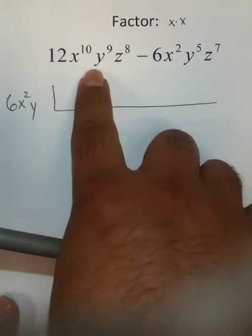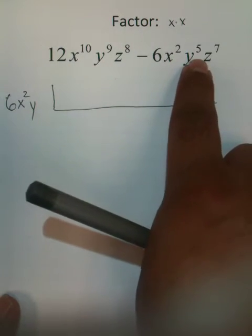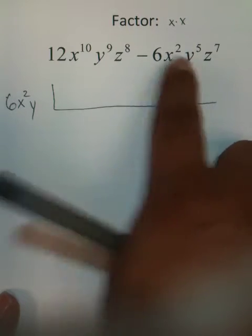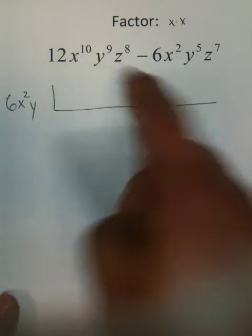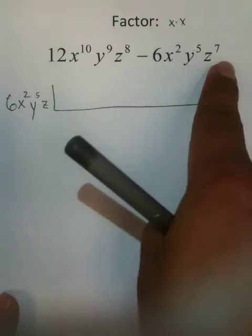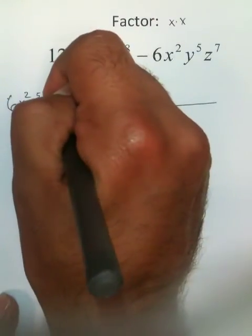The y term, again, you see 9 here and 5 here. Since they're being raised to a power, I'm going to pull all 5 of these because I can pull 5 from here with some leftovers. And then the z, 8 here, 7 here, pull out 7.